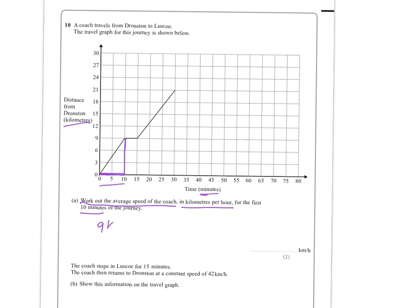Well, if this is the first 10 minutes here, then you can see that it's actually gone 9 kilometres in 10 minutes. So you've got to think to yourself, how do you get this in two hours? Well, if you multiply this by 6 and you do the same to this side, then you'll get 60 minutes. And 9 times 6 will be 54 kilometres in 60 minutes, which is 54 kilometres an hour.